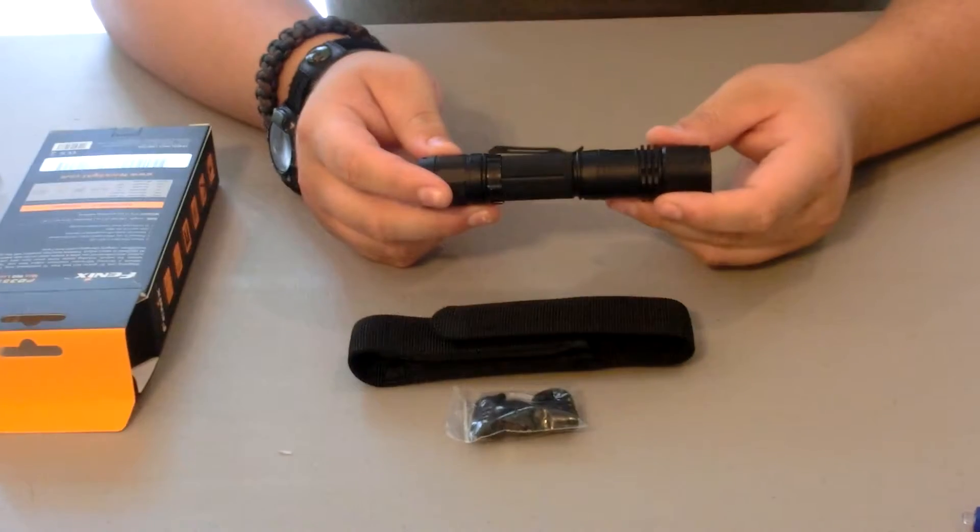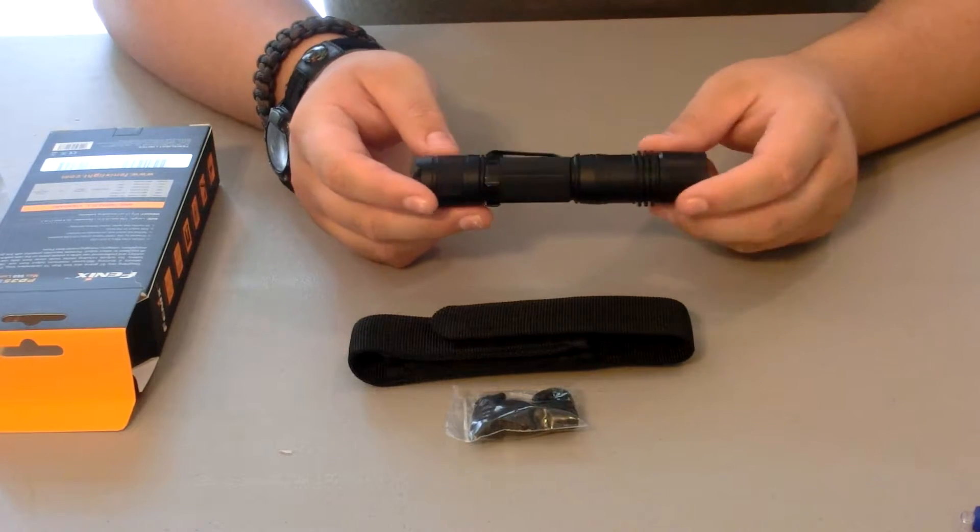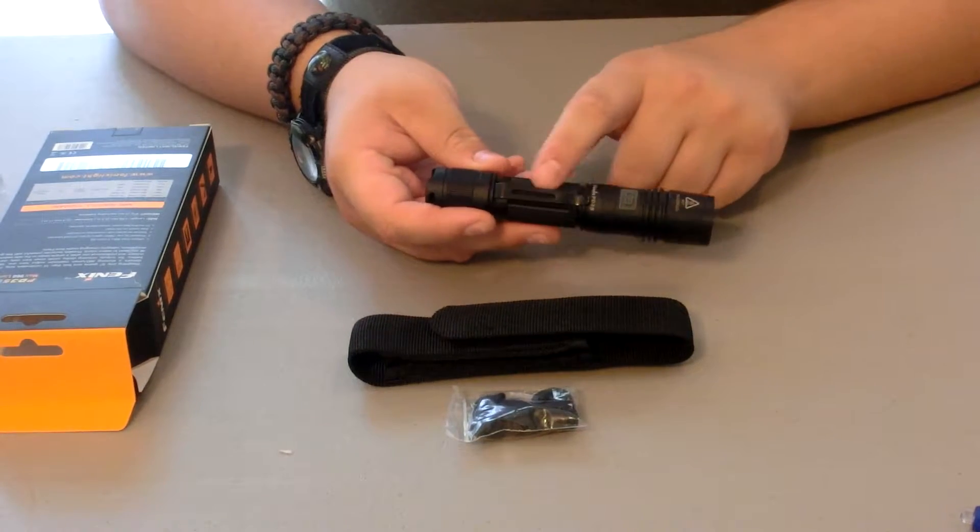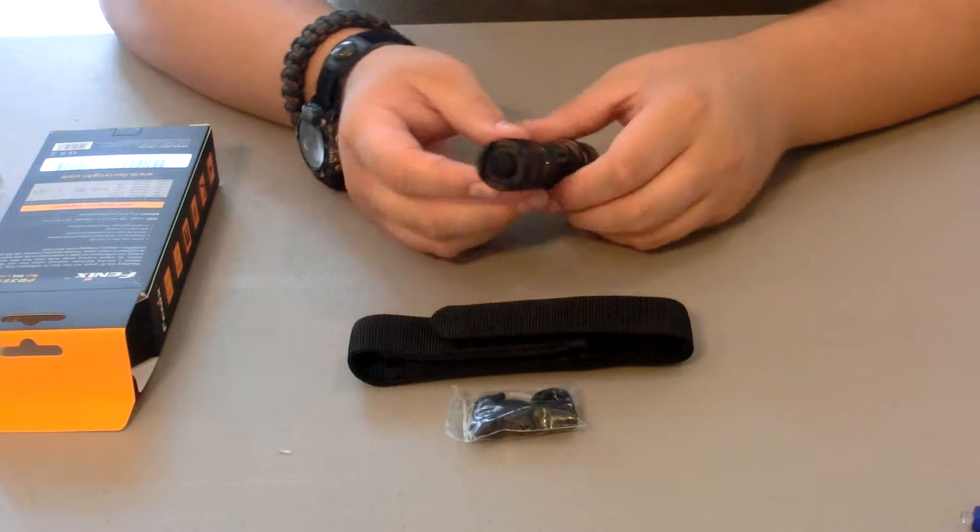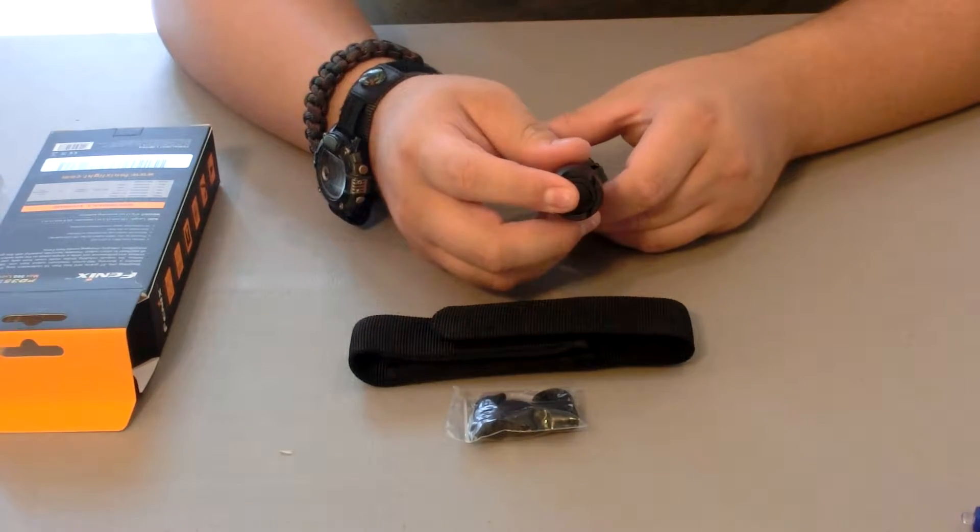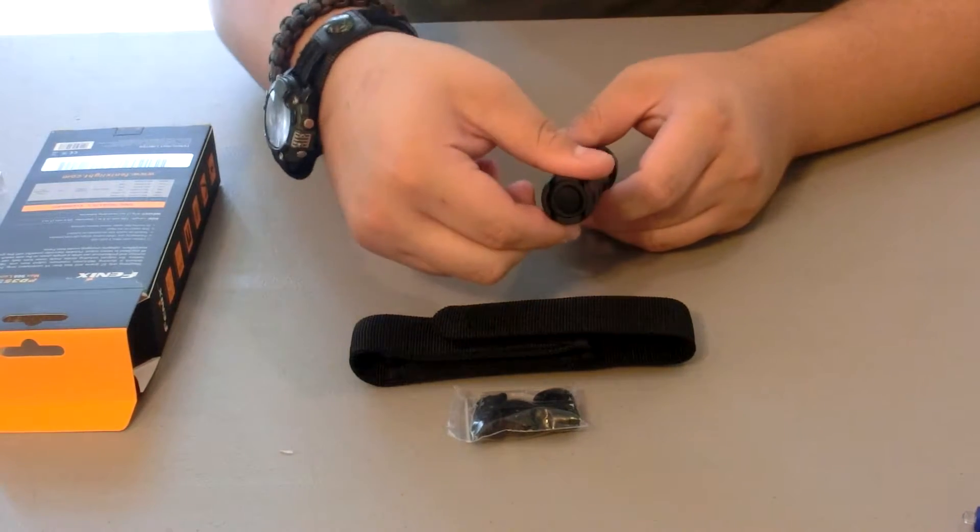You have a nice pocket clip right here on the flashlight and of course the button to turn it on. The batteries, you just screw off the top right here.